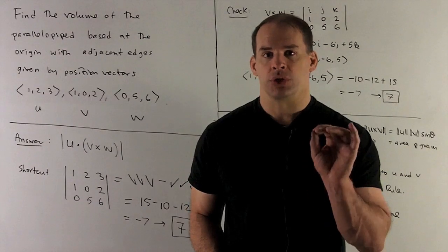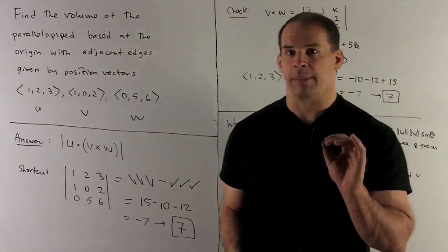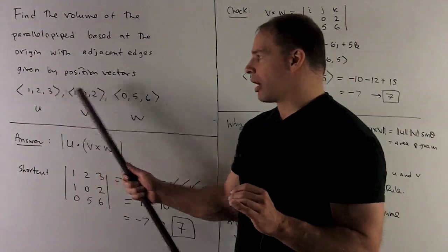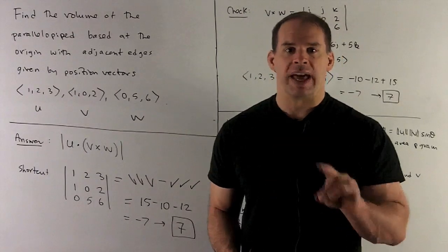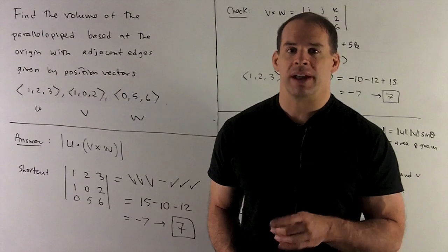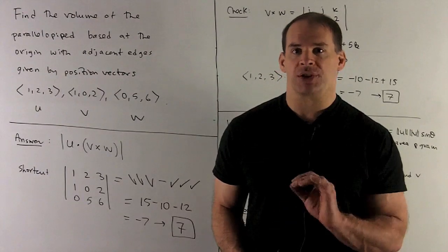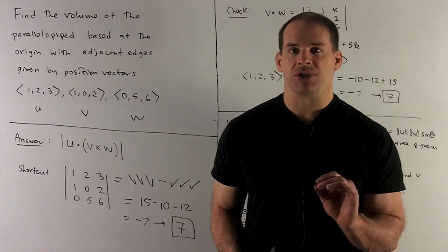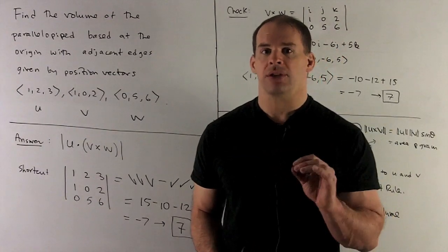Okay, first, the short way to compute this quantity. So what do we do? We're going to take a matrix. I'm going to load our vectors in as the rows. And then what we're going to do is I'm going to multiply down three diagonals in one direction, three diagonals in the other direction, and then we take their difference. So this will be a lot easier if you put the matrix next to yourself. But with some practice, you can do this just by looking at it.